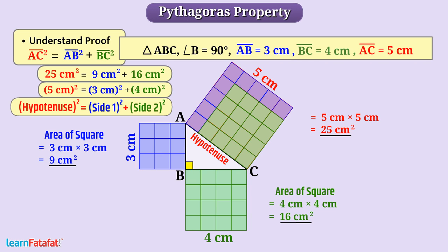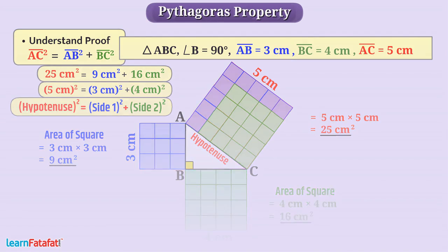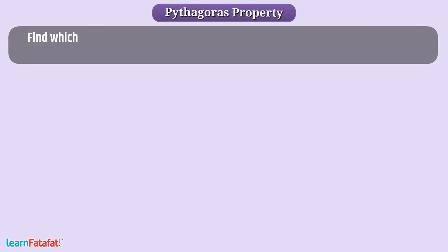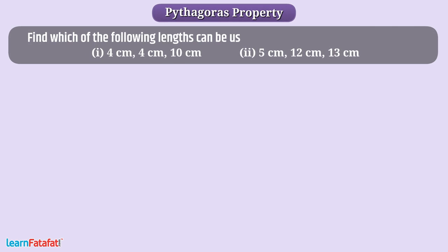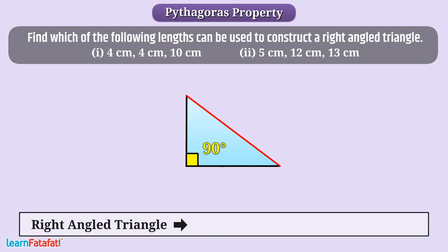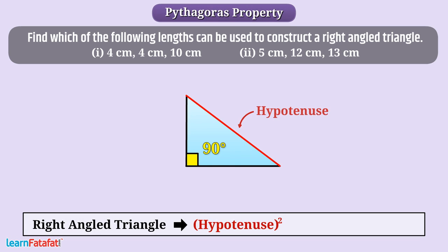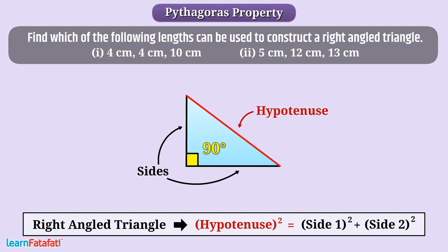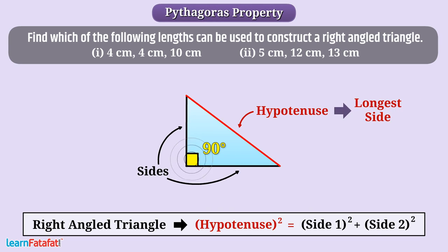Now let's solve some questions based on Pythagoras property. Find which of the following lengths can be used to construct a right angle triangle. In the case of a right angle triangle, the square of the hypotenuse is equal to the sum of squares of the other two sides. The hypotenuse is the longest side in a right angle triangle.